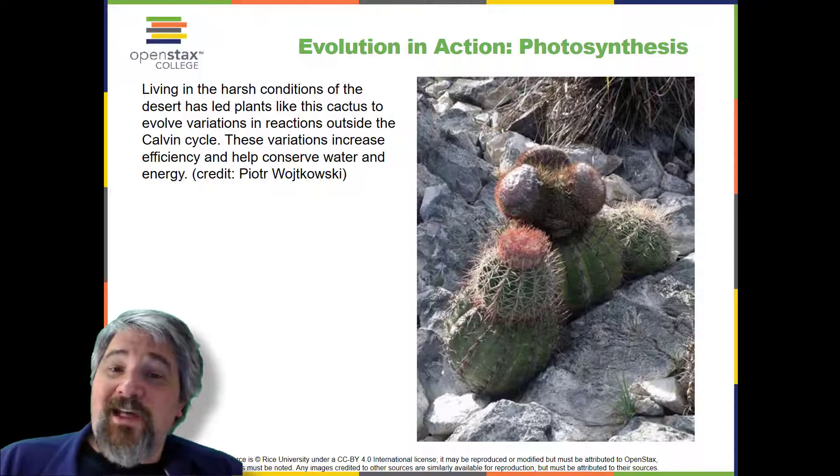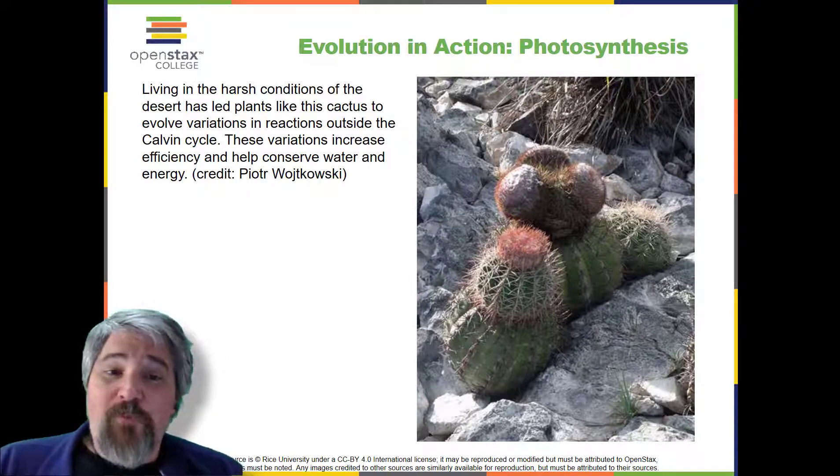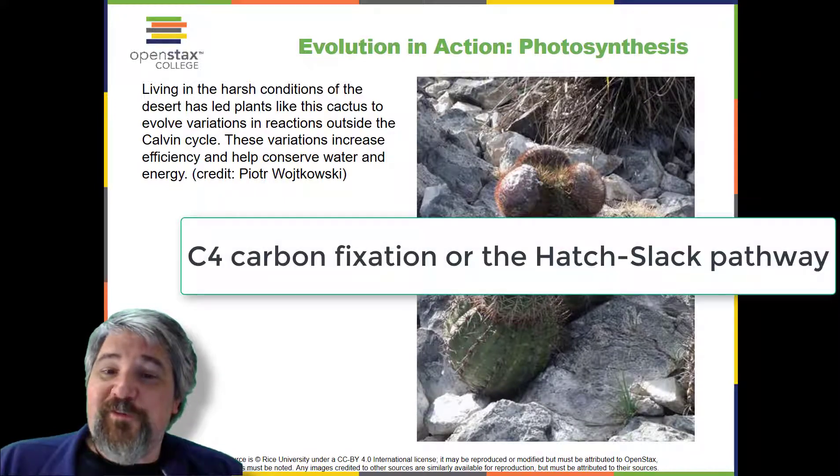Photosynthesis in dry climate plants has evolved with adaptations that conserve water. In the harsh heat, every drop of water and precious energy must be used to survive. Two adaptations have evolved in such plants. In one form, a more efficient use of CO2 allows plants to photosynthesize even when CO2 is in short supply, as when the stomata are closed on hot days.